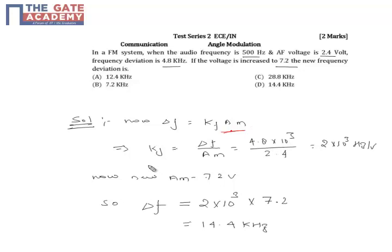Now kf equal to del f upon am. Here del f is given as 4.8 kilohertz and am is given as 2.4. So our kf is equal to 2 into 10 raised to power 3 hertz per voltage.